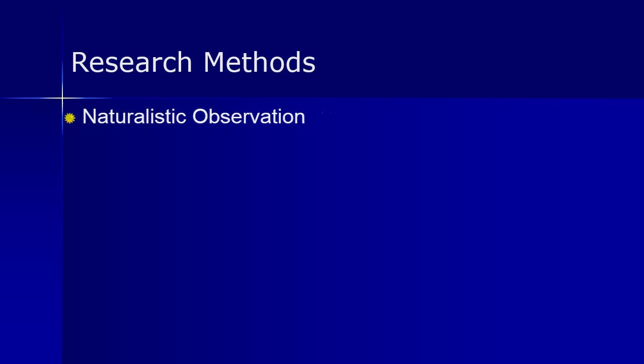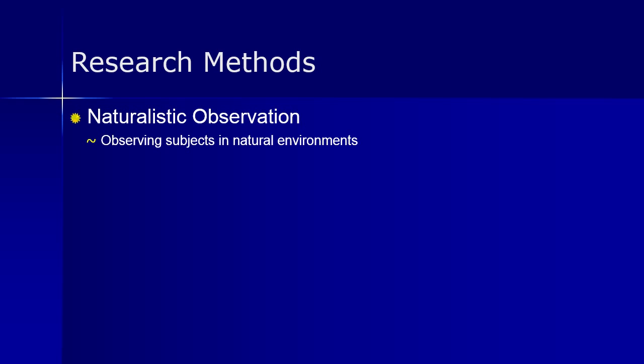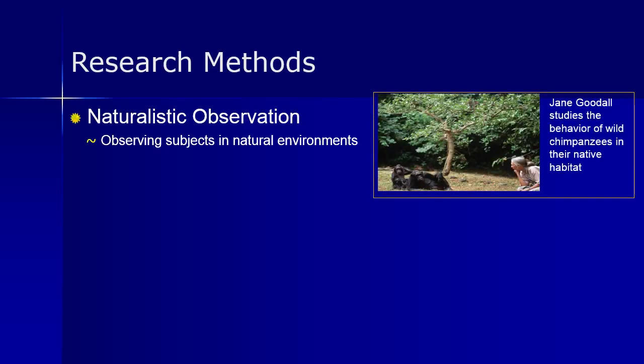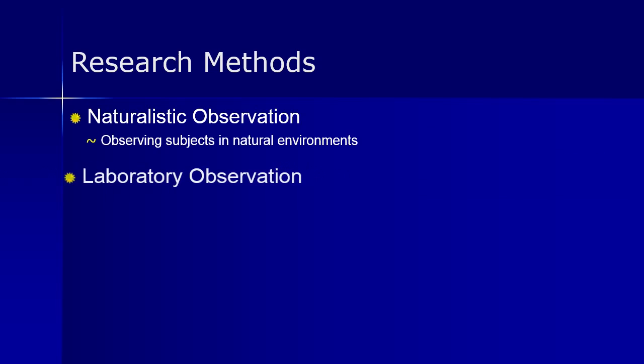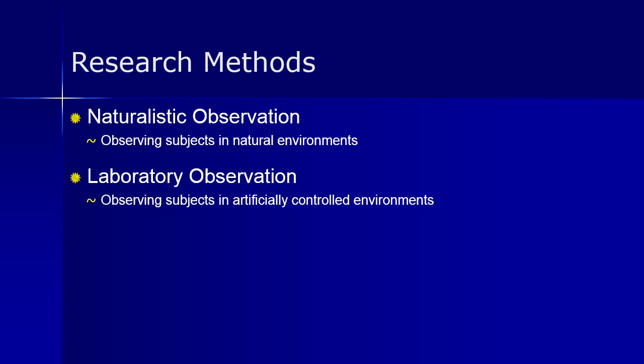Let's briefly look at some research methods. First, naturalistic observation — observing what you want to study in a natural habitat. An example is Jane Goodall studying chimpanzees where they live in Tanzania in East Africa. Another method is laboratory observation, where many studies are conducted in a lab environment to artificially create a situation that can be studied.